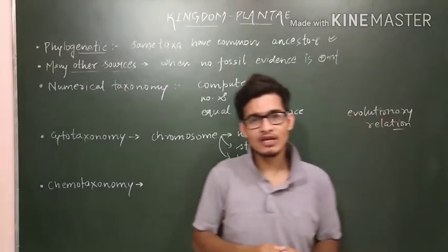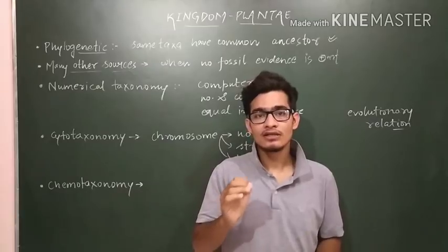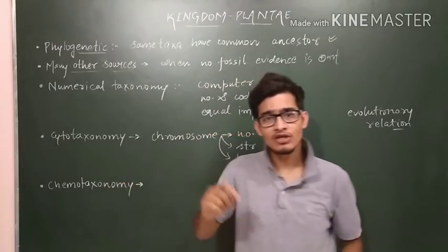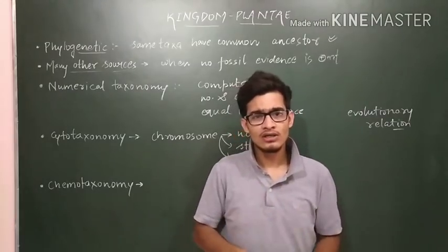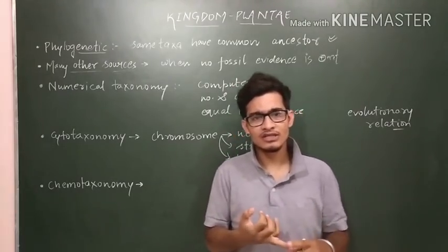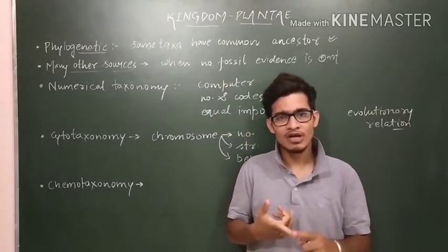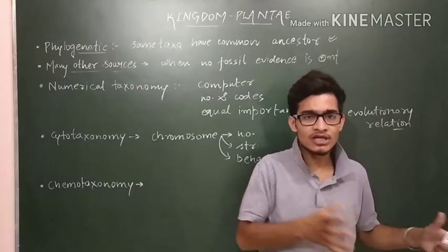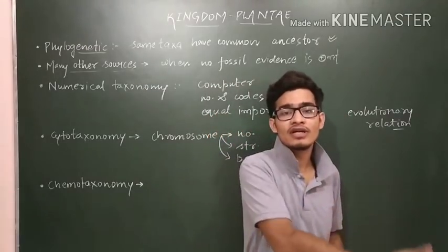Classification is a very important process. You cannot classify organisms based on a single character alone. For example, if you take only the character of cell wall, it is also present in fungi, monera, protista, and plants. So they cannot all be put in the same category, because the cell wall is also of different types.